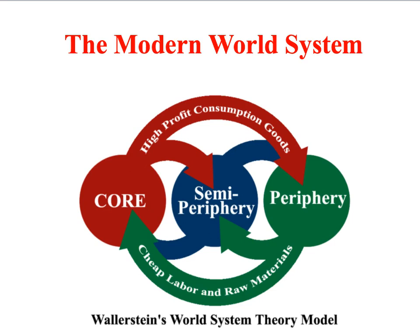According to World Systems Theory, core countries make full use of the global economy and have the power to affect any other country within the system — in other words, core nations have a global reach. Core countries are the ones which get the most out of capitalism; the core takes up all the surplus profits generated by the whole world, exploiting both periphery and semi-periphery countries.